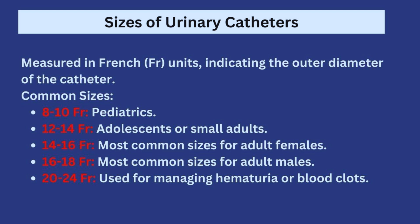Moving on to catheter sizes — these are important because the lumen comes in different diameters, and the size determines who the catheter is used for. Sizes are measured in French (FR) units: size 8–10 for pediatrics, 12–14 for adolescents and young adults, 14–16 for adult females, 16–18 for males, and 20–24 for managing hematuria or clots. Also note that some catheters are labeled for female use only and should not be used for males, as they would not be long enough to reach the bladder — the male urethra is longer than the female urethra.